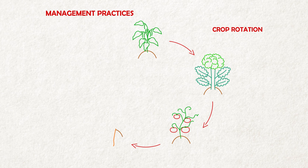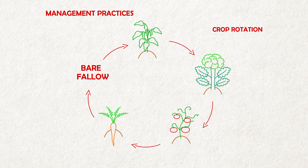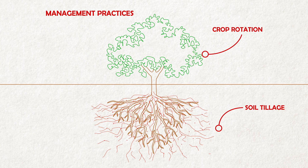Having long periods of bare fallow can lead to a deficiency in mycorrhizal fungi propagules in the soil. Adding a crop that is not responsive to mycorrhizal fungi can have a negative impact on fungal colonization of subsequent mycorrhizae-reliant crops. Likewise, soil tillage or excessive soil disturbance can disrupt the network of mycorrhizal hyphae in the soil. However, in the long run, adequate soil tillage provides positive effects in agro-systems, so a balance should be reached in the specific agricultural context.